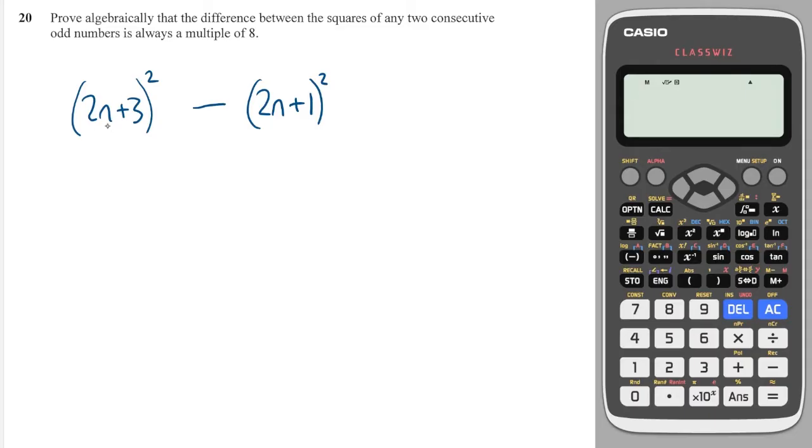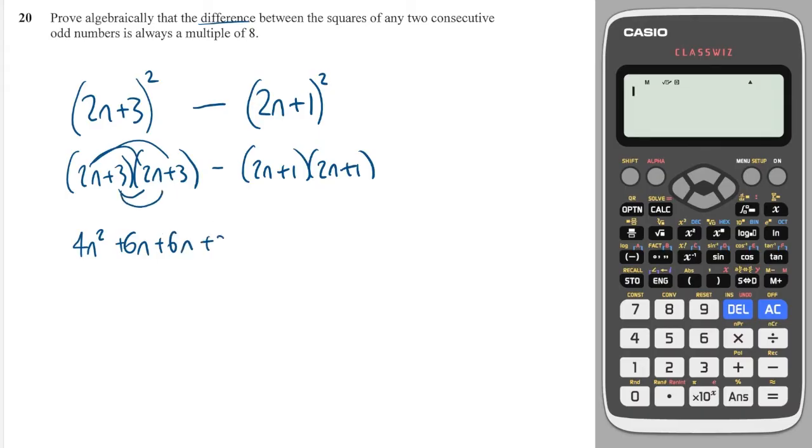Let's do the larger one minus the smaller one to work out the difference. All that's left to do now is just to multiply out these brackets. So 2n plus 3, 2n plus 3, minus 2n plus 1, 2n plus 1. This is going to give you 4n squared plus 6n plus 6n plus 9, and then I'll take away 4n squared plus 2n plus 2n, and then finally plus 1.